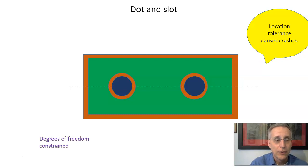If we take a look at the degrees of freedom that are constrained by each hole, the hole on the left is going to constrain these two translations. The hole on the right is going to try to constrain these two translations also. And together somehow they're going to try to constrain this rotation.